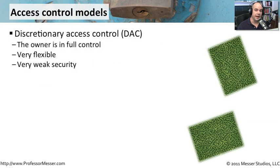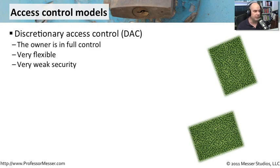With discretionary access control, the person who owns the resource is in complete control of who might have access to that resource. It is very flexible, but from a security perspective, it's very weak. You have the person who owns that information making security decisions on who gets to access it, and one small slip from the owner could give full control to everybody without meaning to.